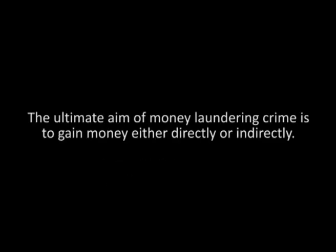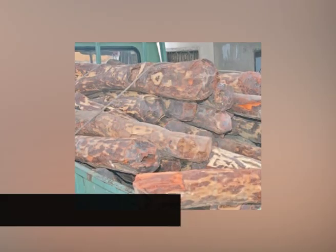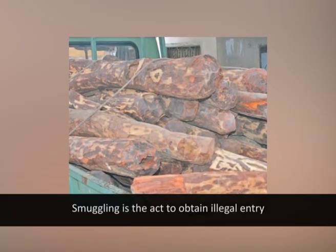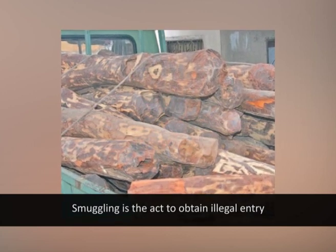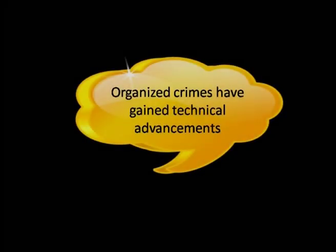The ultimate aim of money laundering is to gain money either directly or indirectly. Human trafficking is defined as the transfer or receipt of people by means of threat, power, or vulnerability for the purpose of exploitation. People smuggling is the act to obtain illegal entry into a state of which the person is not a national resident. Cyber crime involves the usage of computers, networks, the internet, and other information devices such as smartphones. Due to the increase in urbanization, organized crimes have gained technical advancements.